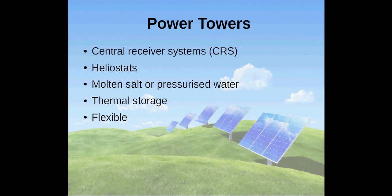Power towers, also known as central receiver systems, employ thousands of field-tracking reflectors, heliostats, to collect sun's radiation. The reflectors are mounted atop a fixed tower. Sunlight is absorbed by molten salt or pressurized water, working as the fluid flowing through the receiver and serving as thermal storage as well.